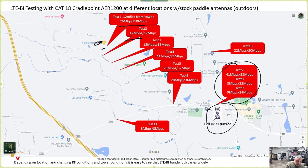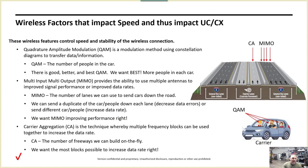Even in one place right next to the tower, I got 41 and 25 — that's pretty good. But a few tests later I got 8 and 22, and 9 and 24. These are things we need to mitigate somehow. We need to peel back the onion and figure out how to mitigate these things if we're going to run real-time communications and do QoS.